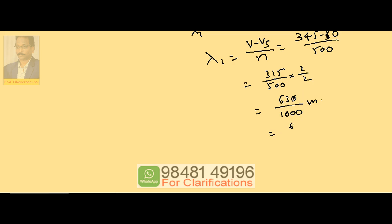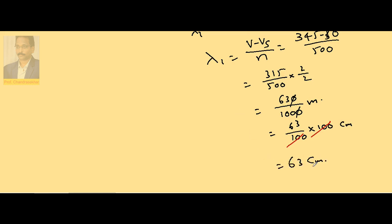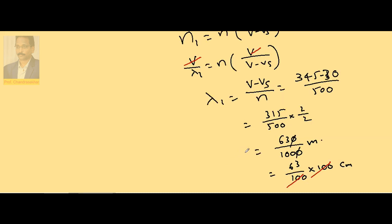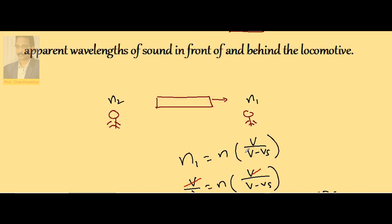Cancel a zero: 63 by 100 into 100 centimeters. If I cancel 100 then the value becomes 63 centimeters, or 0.63 meters. This is the wavelength perceived by the observer standing in front.